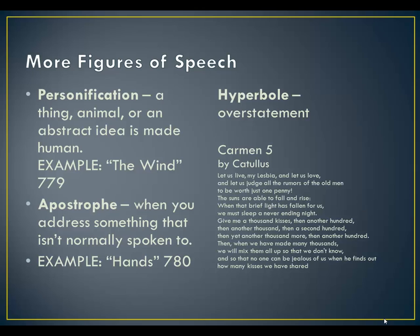Personification is a figure of speech in which a thing, an animal, or an abstract term is made human. An example is found on page 779, 'The Wind,' where the wind is animated and given human qualities: 'The Wind stood up and gave a shout / He whistled on his fingers and kicked the withered leaves about / And thumped the branches with his hand / And said he'd kill and kill and kill / And so he will.' That's found on page 779.